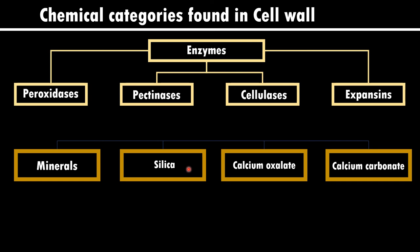Cell wall is 70 to 80 percent made up of water. So water, minerals, enzymes, lipids, proteins, and carbohydrates are the major chemical compounds seen in the cell wall.